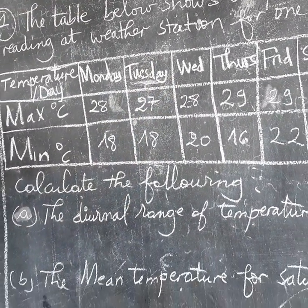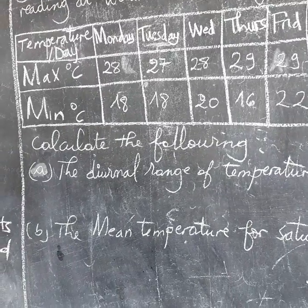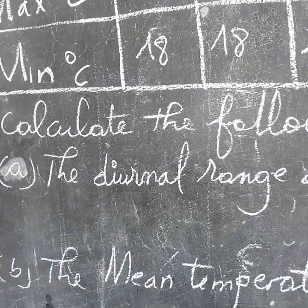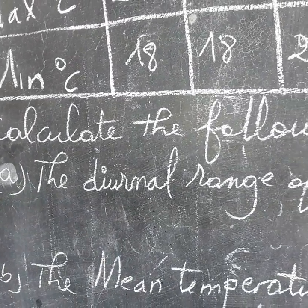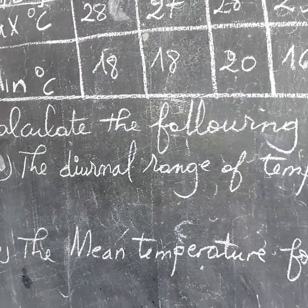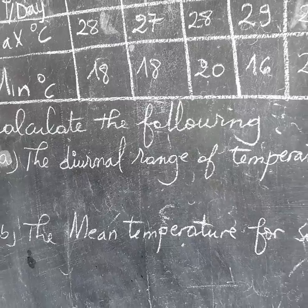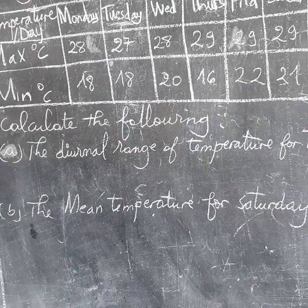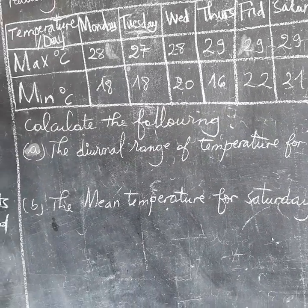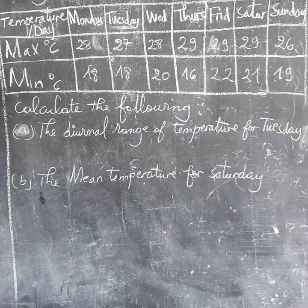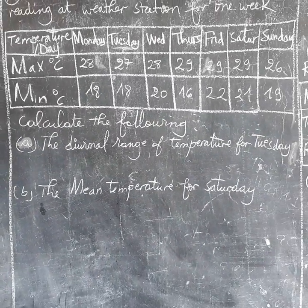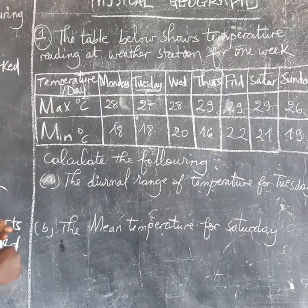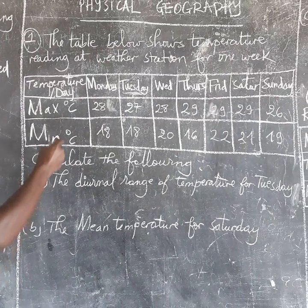Remember, when we are calculating the range of temperature, we take the maximum temperature minus the minimum temperature — or in other words, the highest temperature minus the lowest temperature.